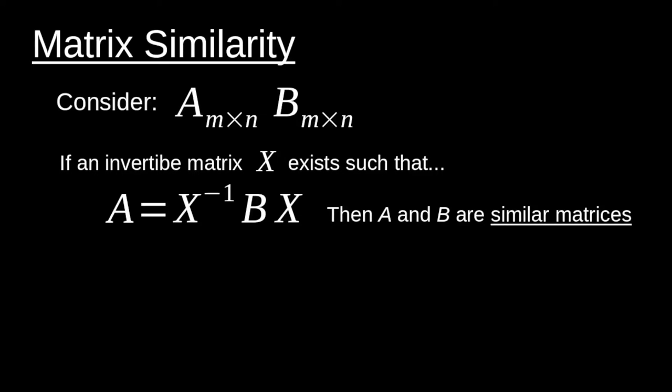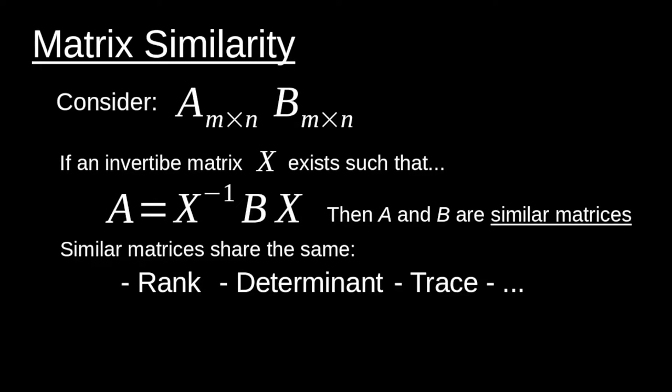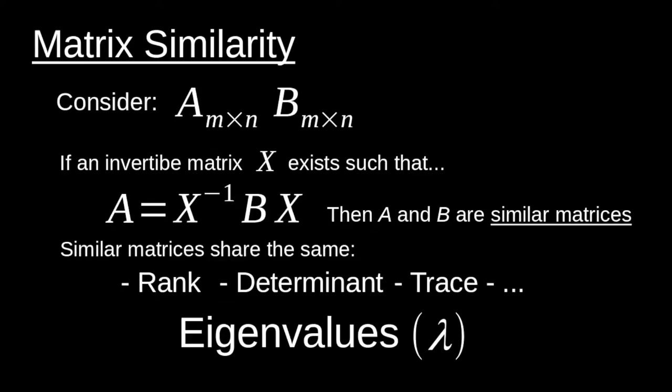That's particularly important because if A and B are similar matrices, they will share a number of the same values or qualities. They will share the same rank, the same determinant, the same trace. There are numerous qualities that they will share. But most importantly, they will share the same eigenvalues. And this idea of matrix similarity and the fact that similar matrices will share the same eigenvalues is a crucial piece of information that we can leverage to our advantage in computing eigenvalues.